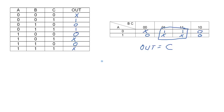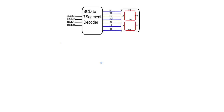That example was somewhat generic and was mainly meant to show you the mechanics of using don't cares. So let's look at an example that actually has a real application — a binary coded decimal to seven segment decoder.